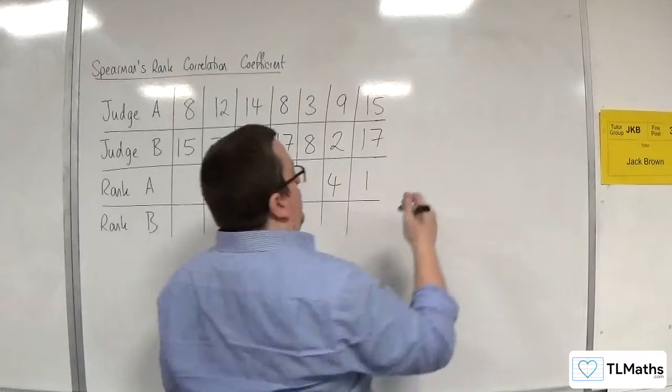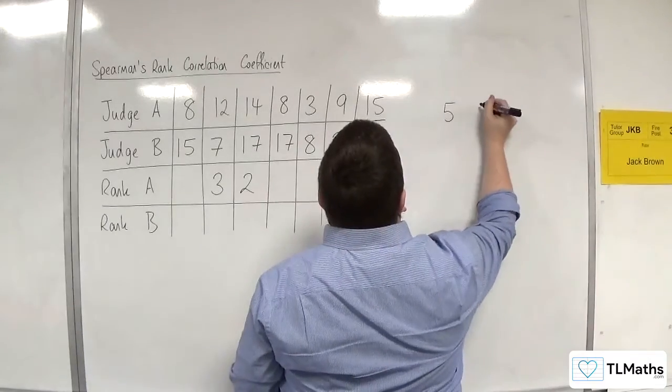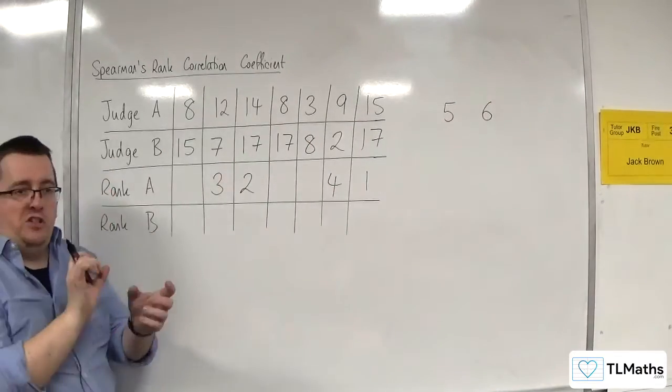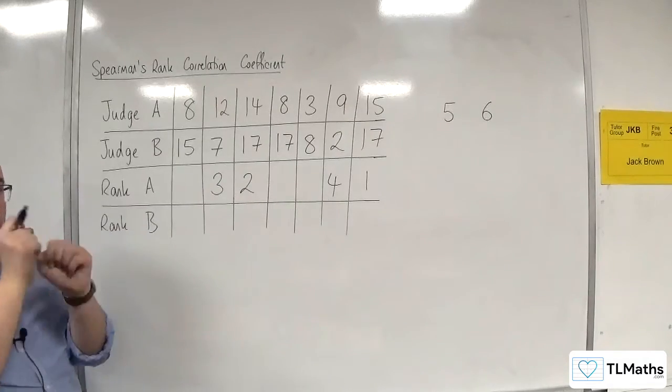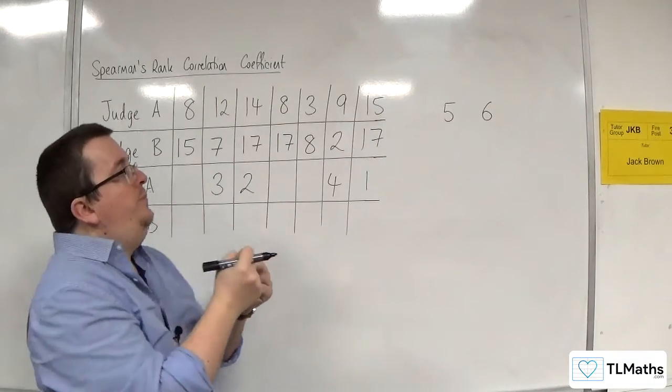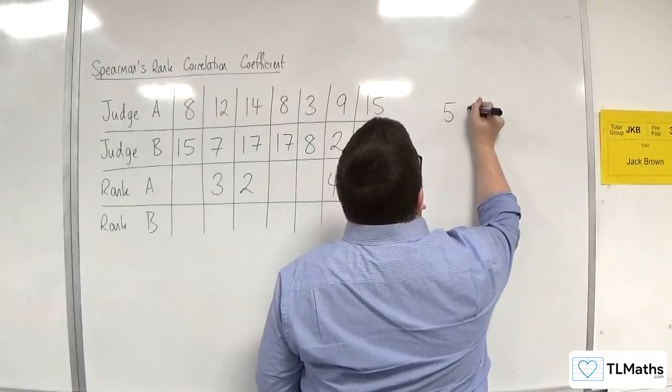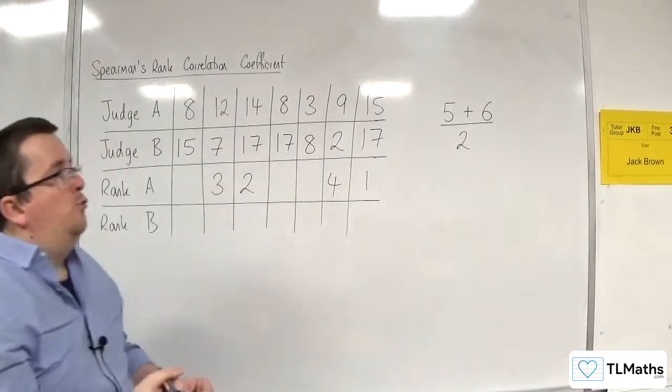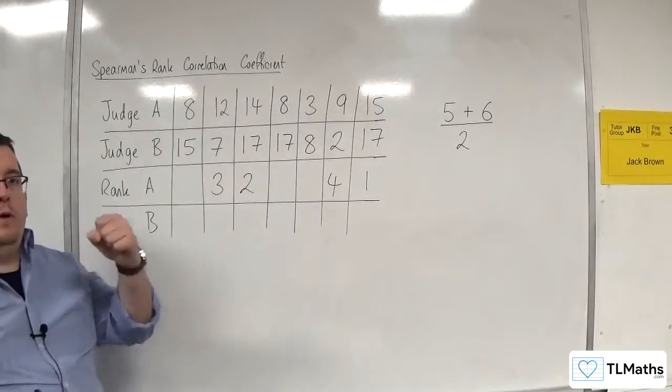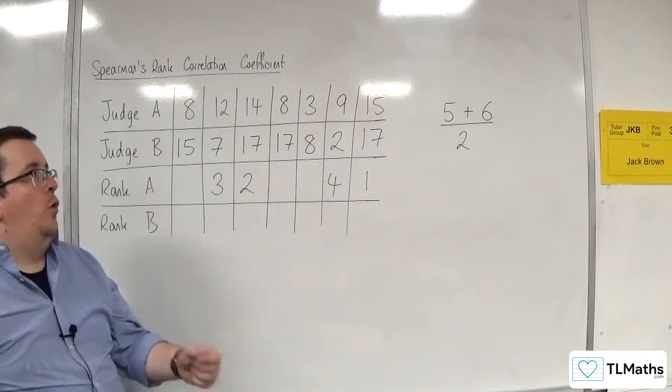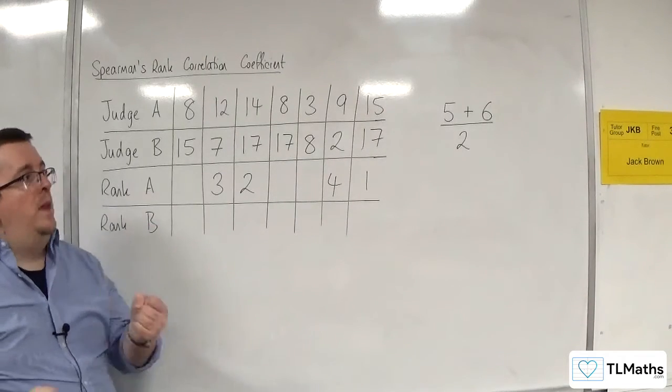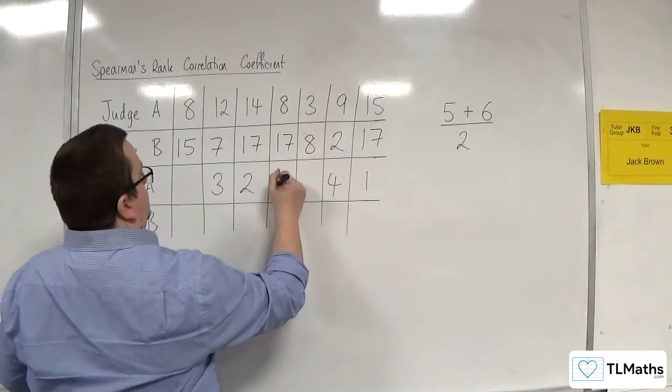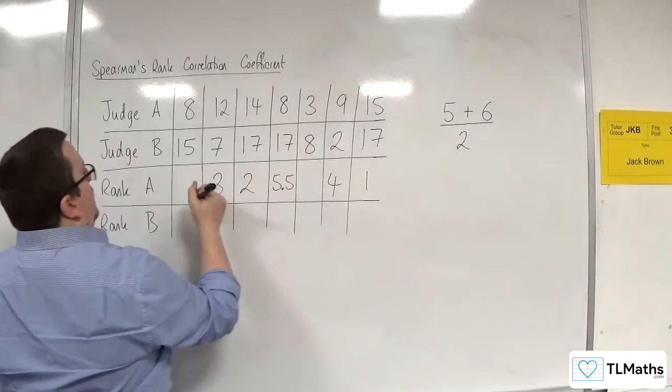One of them would have got fifth position, and one of them would have got sixth position. Just imagine that they got slightly different scores. And what you do is you average those scores. So, rather than giving 1, 5 and 1, 6, or giving them both 5, what we do is we give them both 5.5, the average of the 2.